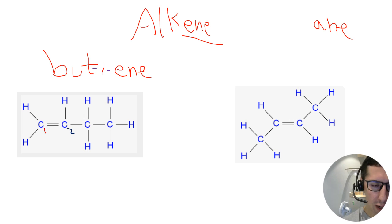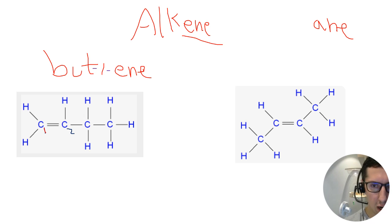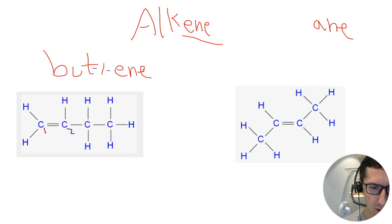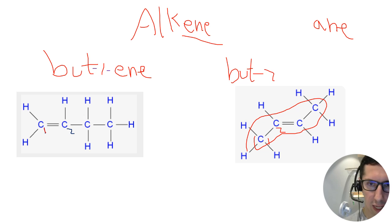Pause the video and try to name the next one yourself. The longest chain has four carbons. The double bond is on carbon two regardless of which end you start from. So this is called but-2-ene.